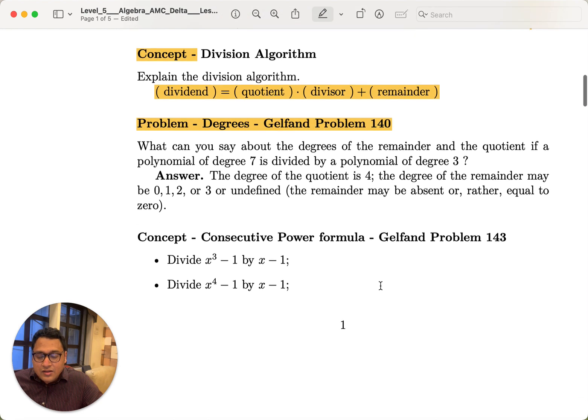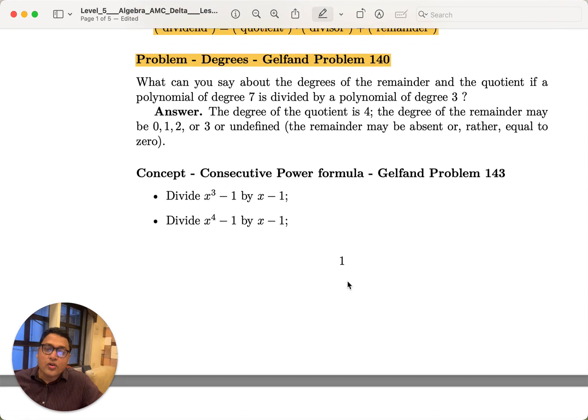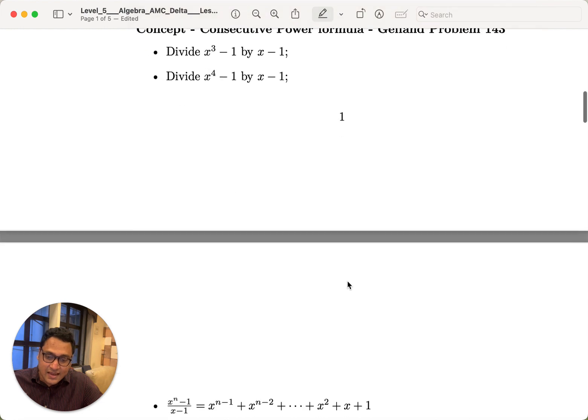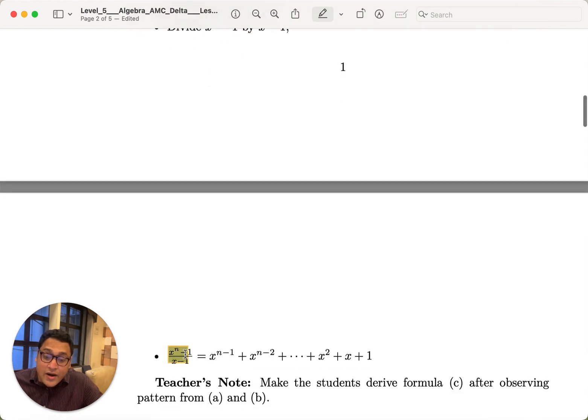Then we actually go into a very interesting problem in polynomials and that is x to the power n minus 1 divided by x minus 1. There are a lot of problems built on this formula. x to the power n minus 1 by x minus 1 happens to be the sum of consecutive powers of x.